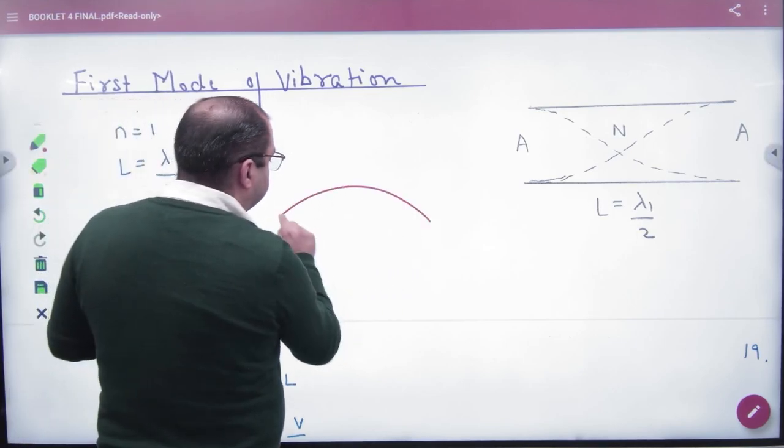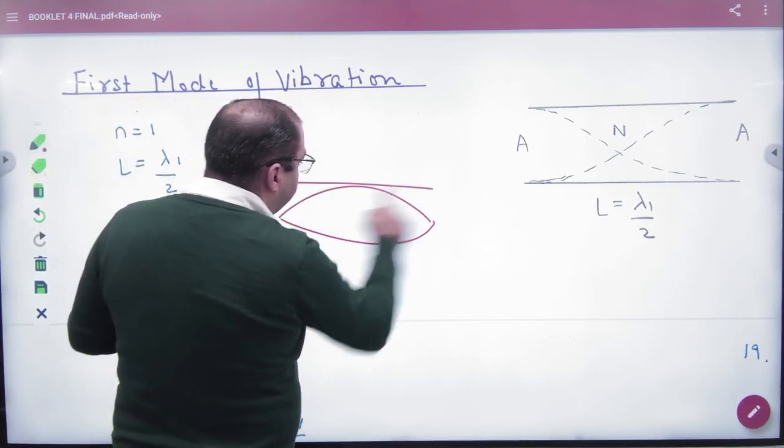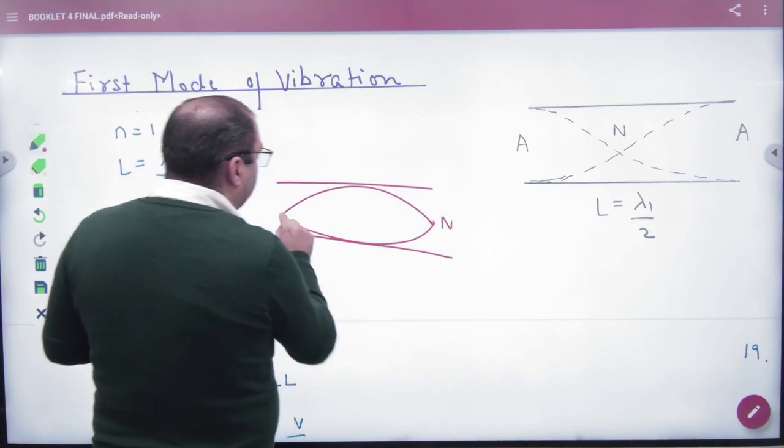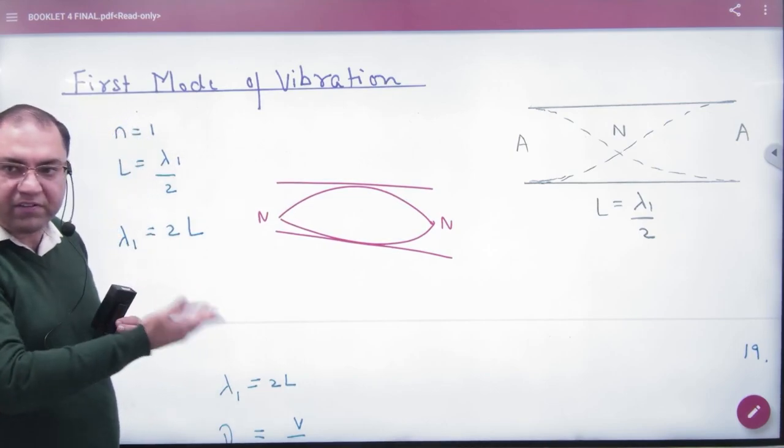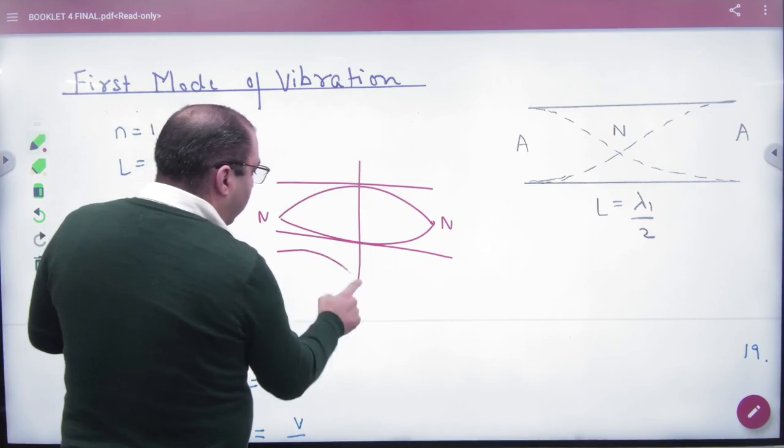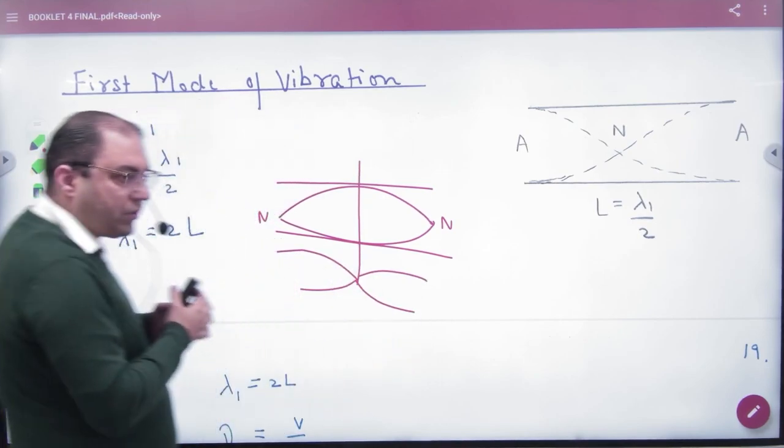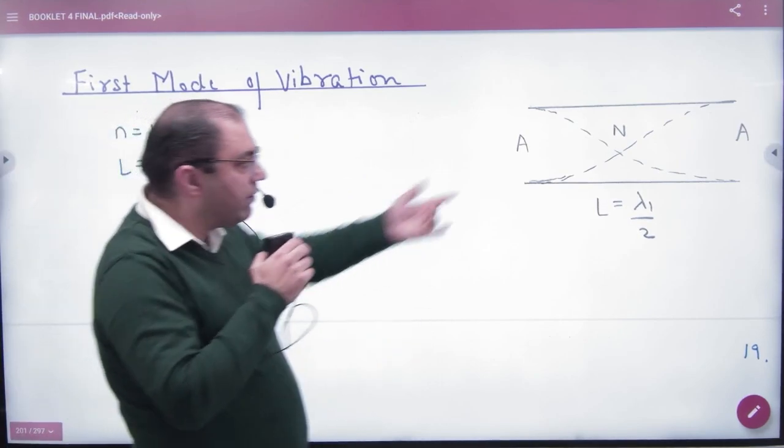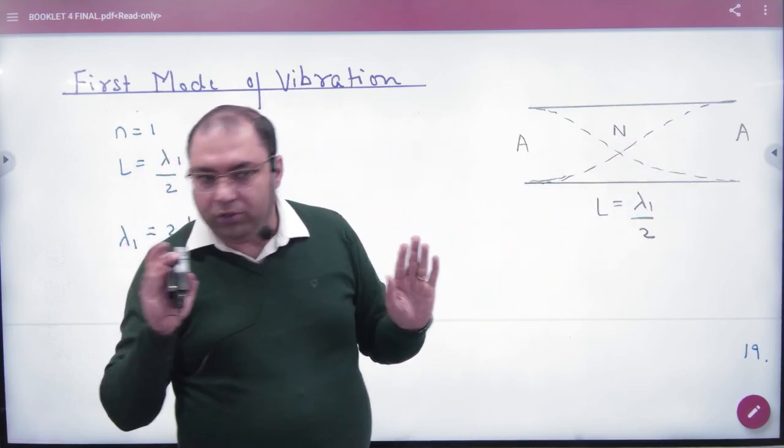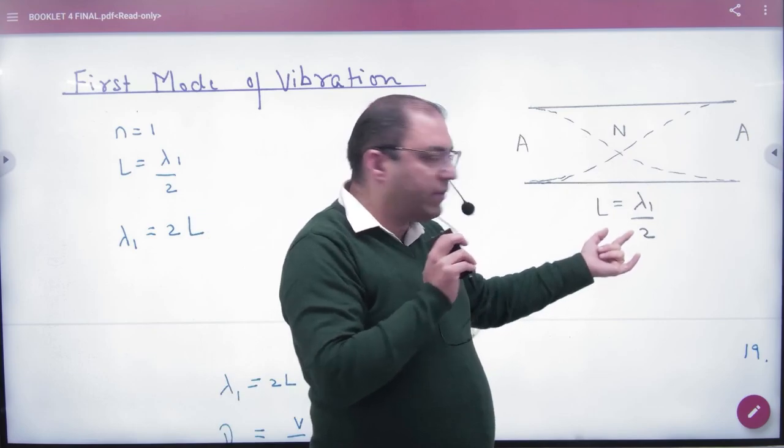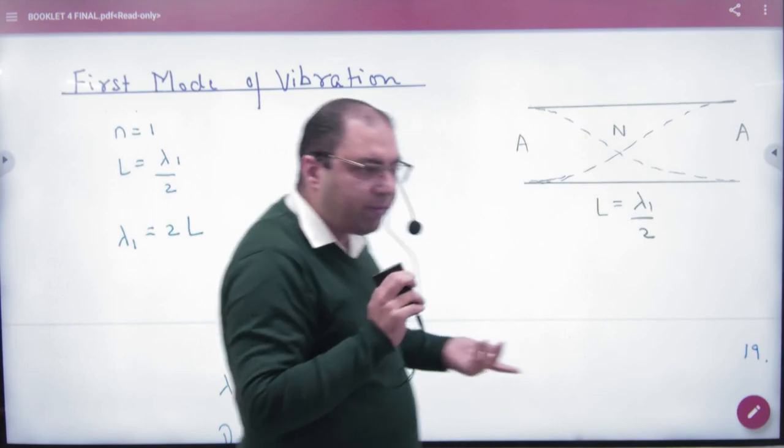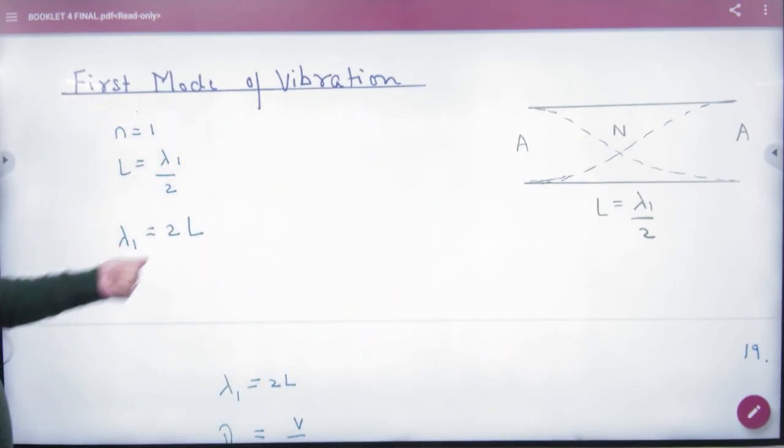This is a loop. But if I put a loop on the pipe, then what will be node? Now what will be anti-node? We will divide it into the loop. Lambda by 4, lambda by 4. Because what should be anti-node? This is the first diagram. L is equal to lambda by 2, because this is lambda by 4, this is lambda by 4, so it is lambda by 2. Lambda 1 is 2L. Frequency is lambda 1, lambda 1 is 2L, which is the first frequency which is the fundamental frequency.